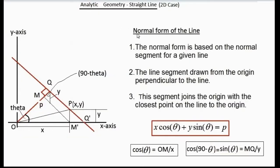Let's look at the normal form of the line. We have to describe the equation of the line q-q prime. From the origin, we drop a perpendicular onto the line q-q prime. The perpendicular is always unique for a line from a given point. The length of perpendicular is p in this case. Also, the perpendicular makes theta degrees with the x-axis.